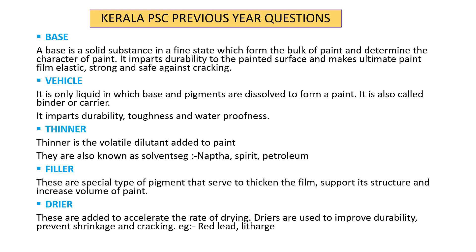The vehicle is used as a carrier and binder. It helps the mixture spread perfectly. The vehicle is in liquid form — it carries the base and pigments dissolved in it, and we paint it in liquid form.